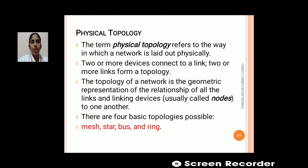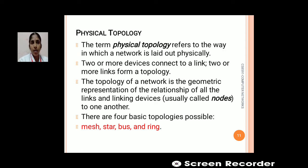The physical structure of a network can also be identified using physical topology, which plays a major role in identifying the physical network. Physical topology refers to the way in which a network is laid out physically. Two or more devices connect to form a link, and two or more links form a topology. The topology of a network is the geometric representation of the relationship of all the links and linking devices to one another. There are four basic topologies: mesh, star, bus, and ring.